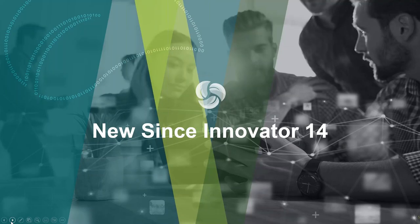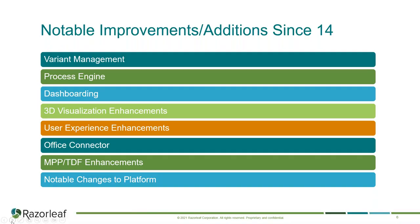Now we can transition to our big recap of everything added to Innovator since version 14 and upwards. I started by creating this long list of notable improvements and additions. We've seen new platform components like variant management and the process engine, a major new dashboarding functionality, countless enhancements to 3D visualization, the overall UI and user experience, the Office Connector, MPP, and the TechDocs framework. There have also been notable changes to platform requirements to run Eris on the back end.